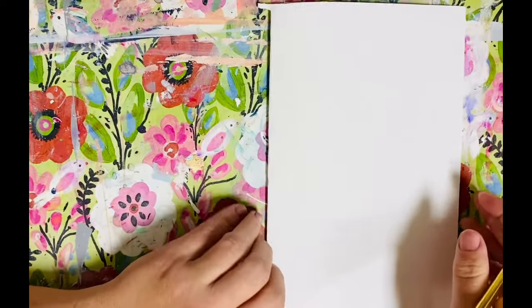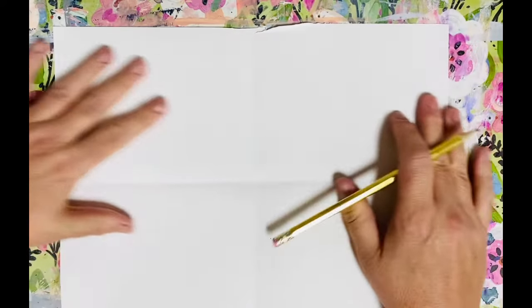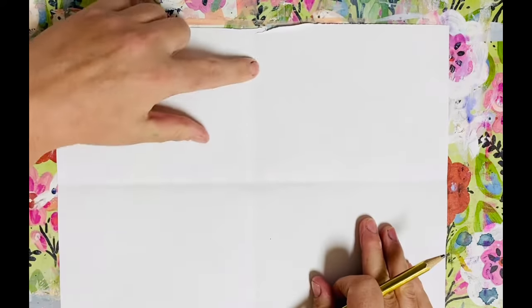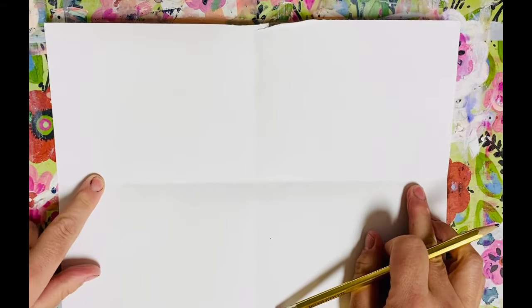I'm going to start by folding my paper in half and I'm going to fold it in half the other direction. This is going to give me two lines to work with, one down the center each direction.